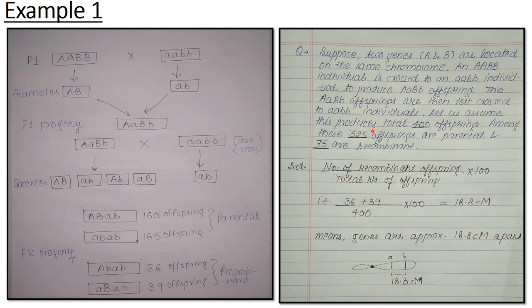This statement you have to look at with attention. A cross was made. Parental genotype was this. Which gametes were formed? These were formed. Gametes are always pure. F1 progeny had this genotype from crossing over. Then F1 progeny underwent test cross.